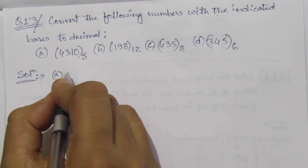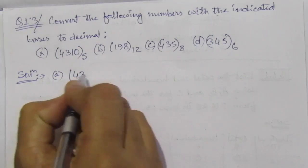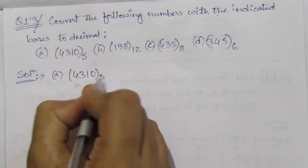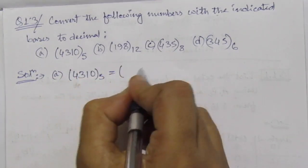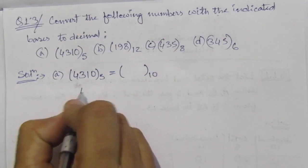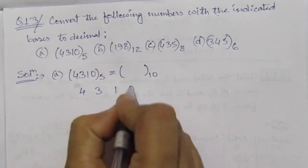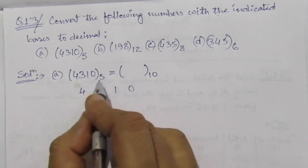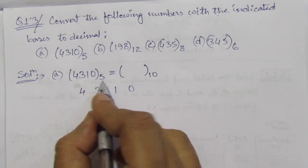So first of all, we have to find out (4310) base 5 equal to how much it will be in decimal. So write down like this: 4310. This is in base 5.